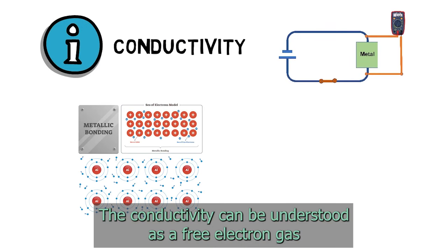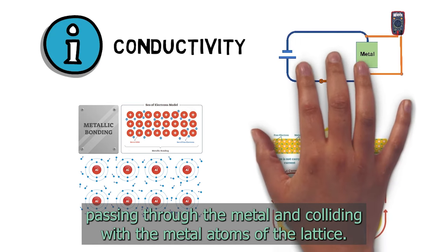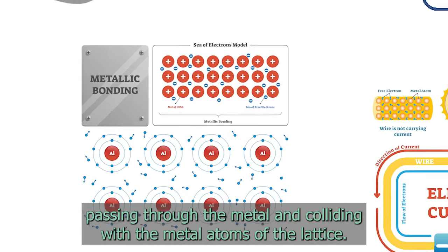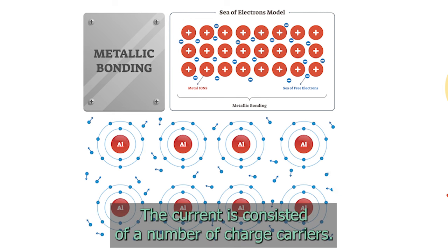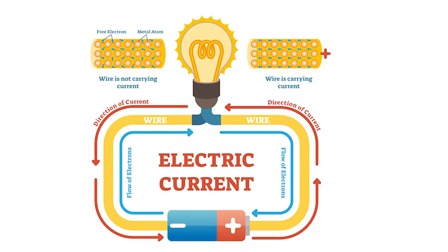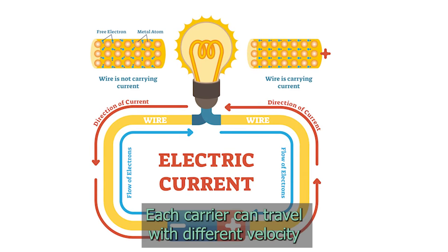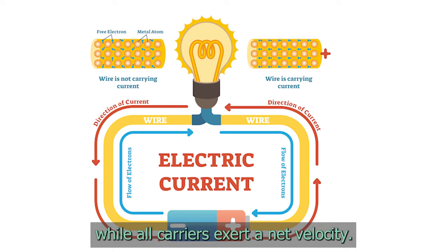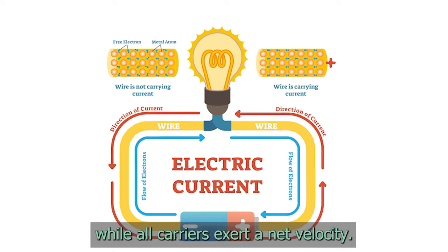We can attach a voltmeter on the circuit to identify the conductivity or resistivity of the material. The conductivity can be understood as a free electron gas passing through the metal and colliding with the metal atoms of the lattice. The current consists of a number of charged carriers, typically electrons, holes, and ions. Each carrier can travel with different velocity, while all carriers exert a net velocity.